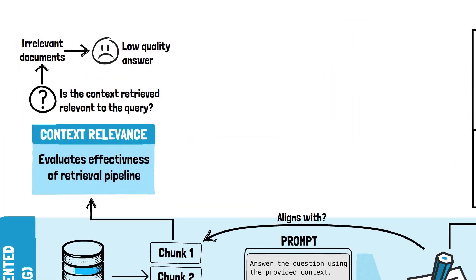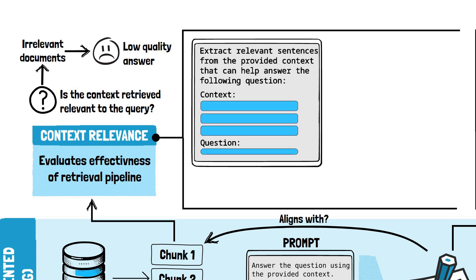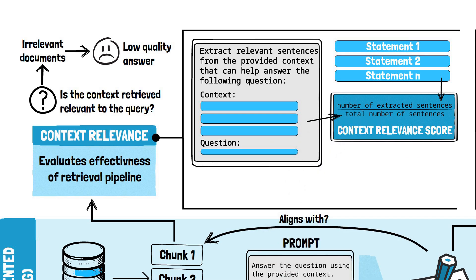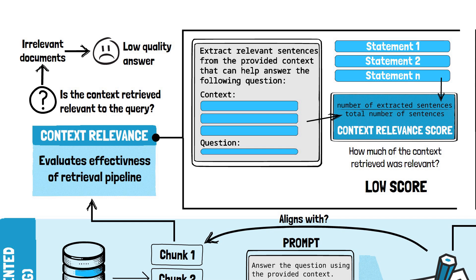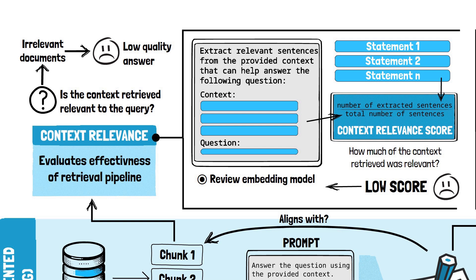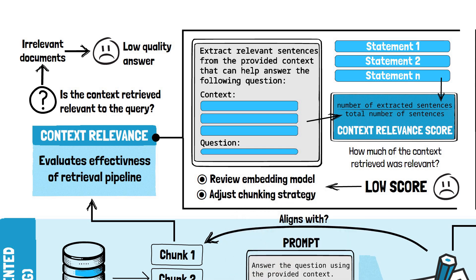Finally, context relevance is checked by prompting an LLM to extract key sentences from the retrieved context that are relevant to answering the question. The context relevance score is then calculated as the ratio of relevant sentences to the total number of sentences in the context, essentially asking how much of the retrieved content was actually relevant. A low context relevance score could signal that the retrieval process needs adjustment — this might mean evaluating different embedding models or adopting a different chunking strategy, as overly large chunks might include too much irrelevant information.